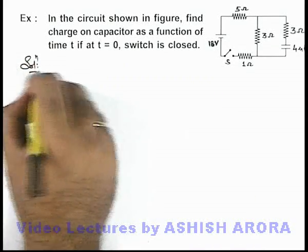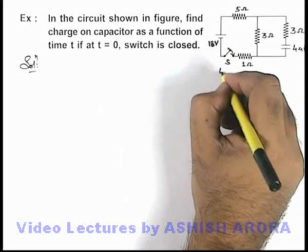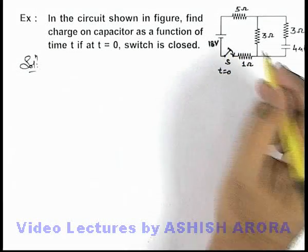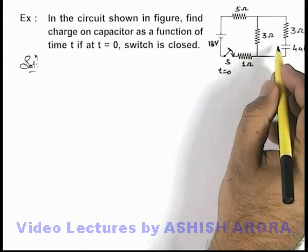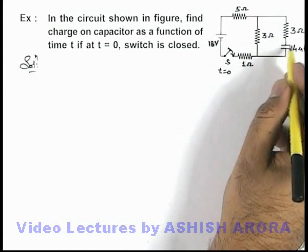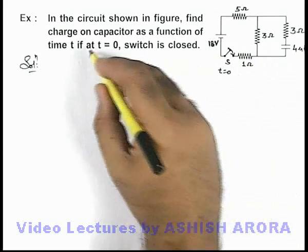Now in this situation if we close down the switch at t equal to zero, obviously a current flows in this loop and another in this loop, and after analyzing the circuit we need to calculate the charge deposited on capacitor as a function of time.